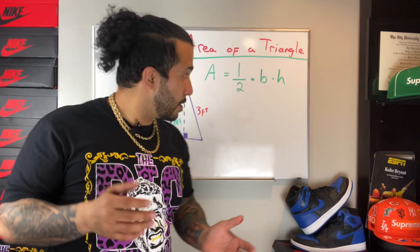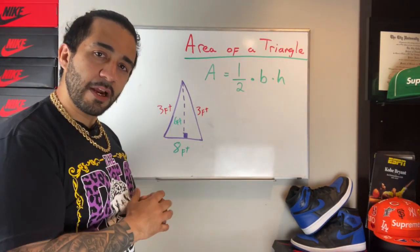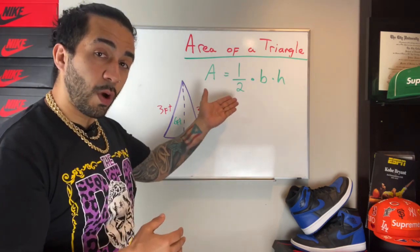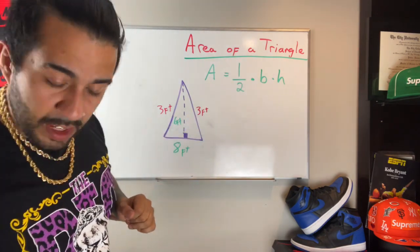Now the formula is what you need to start. Formula for the area of a triangle - you can use this one, which is one half times the base times the height.